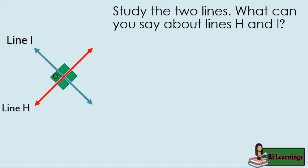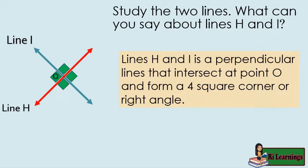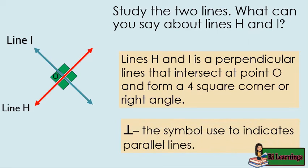What can you say about lines H and I? Even though line H and line I are two separate diagonal lines, lines H and I are perpendicular lines that intersect at point O and form four square corners or right angles. This is the symbol used to indicate perpendicular lines. So we can say that Line H is perpendicular to line I.